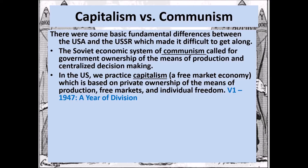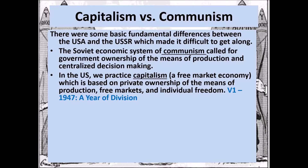Capitalism is a free market economy based on private ownership. Here we have 'I want you to buy crap' — a play on the famous James Montgomery Flagg poster 'I Want You for the U.S. Army.' Instead, he wants you to buy Coca-Cola, FUBU, Burger King, Ford, McDonald's, Nike, pizza, and all those different products we can get in the United States.